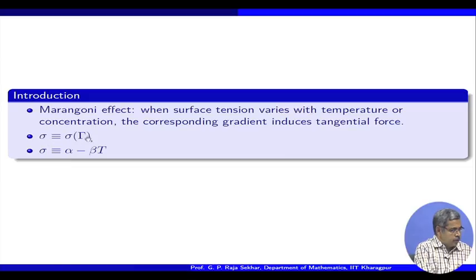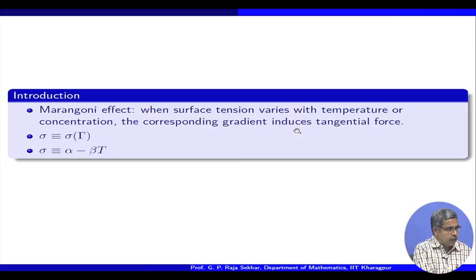If you consider surface tension, it may depend on any physical quantity like temperature or concentration. It is proven that typically in a linearized approximation, surface tension depends on temperature or concentration linearly, where alpha is constant, beta is constant, and T is temperature. Such effects where surface tension varies with temperature or concentration and the corresponding gradient induces tangential force — that is called the Marangoni effect.